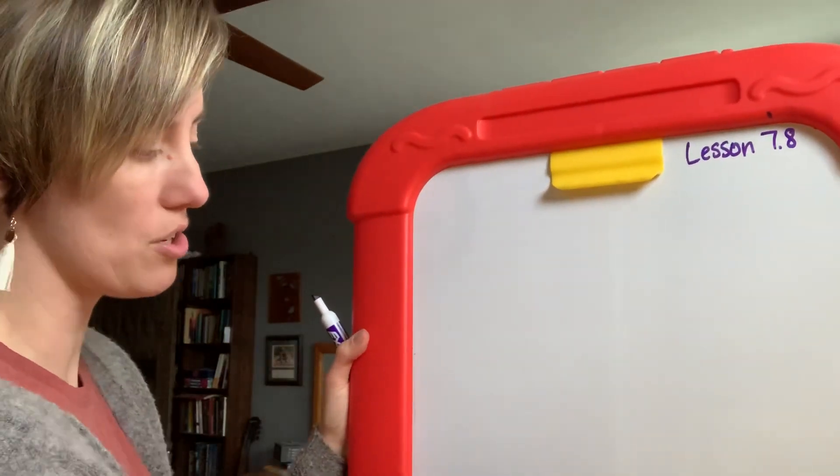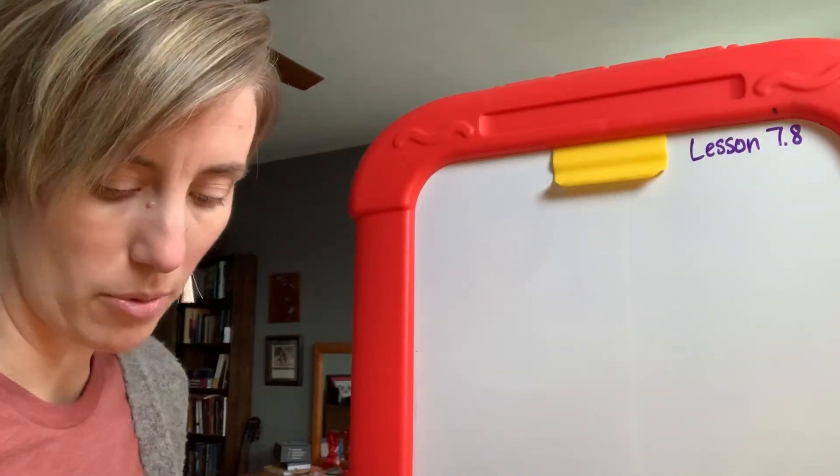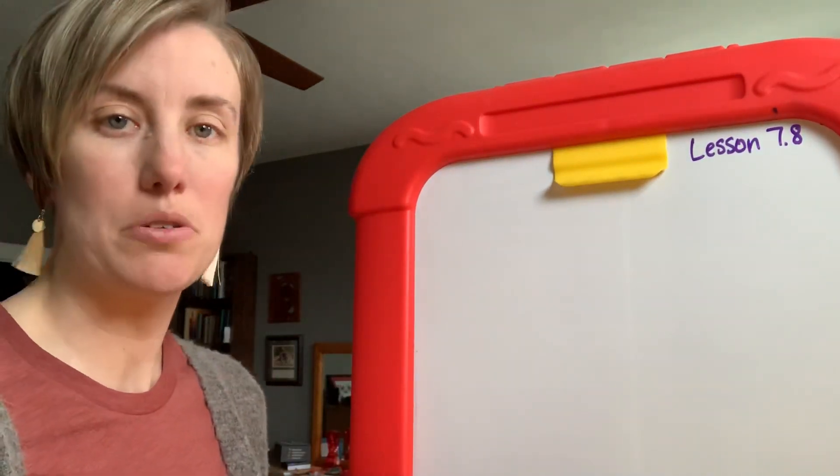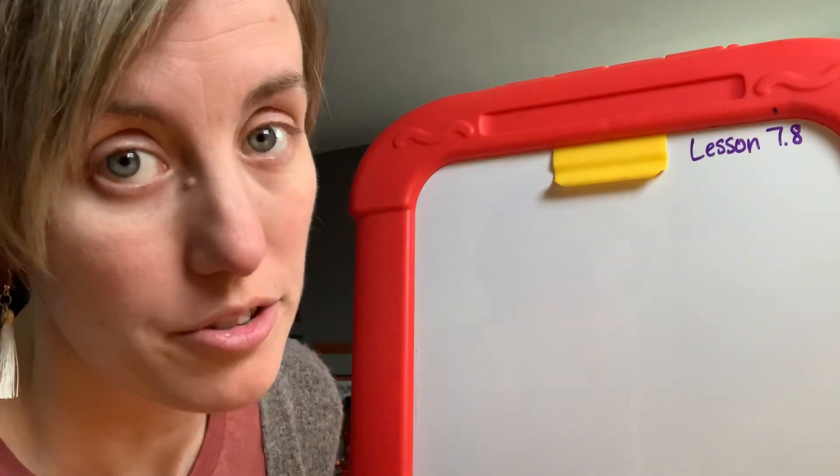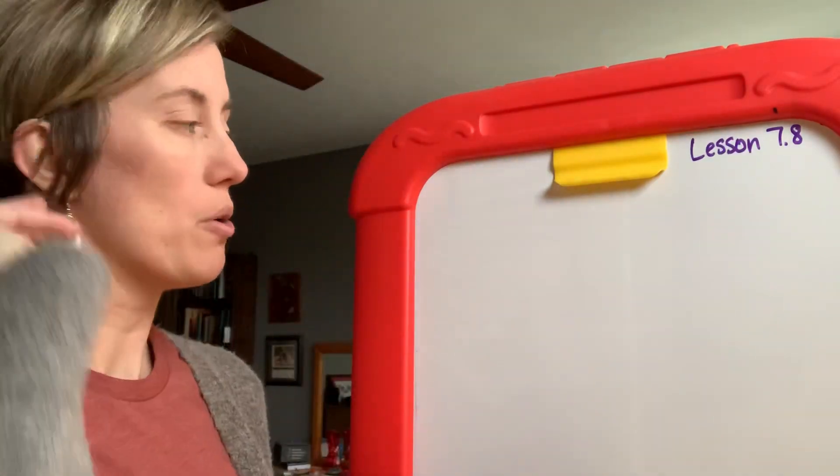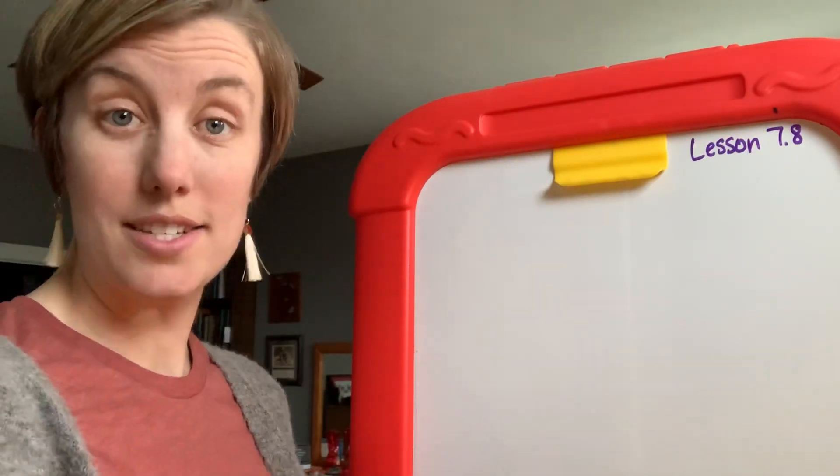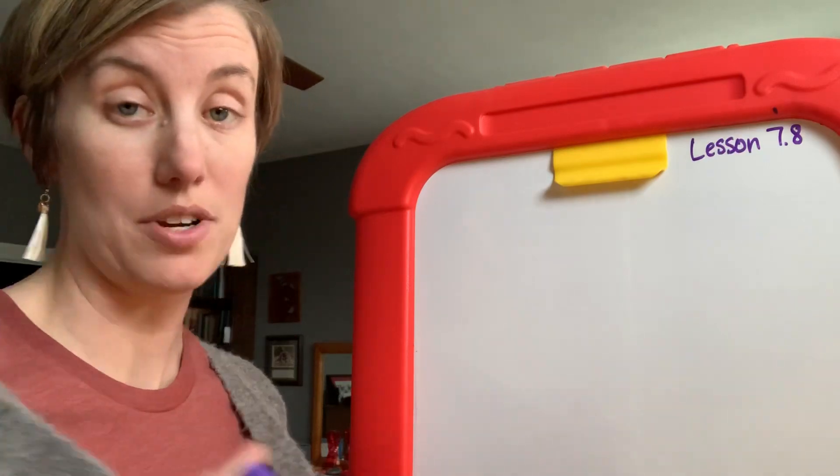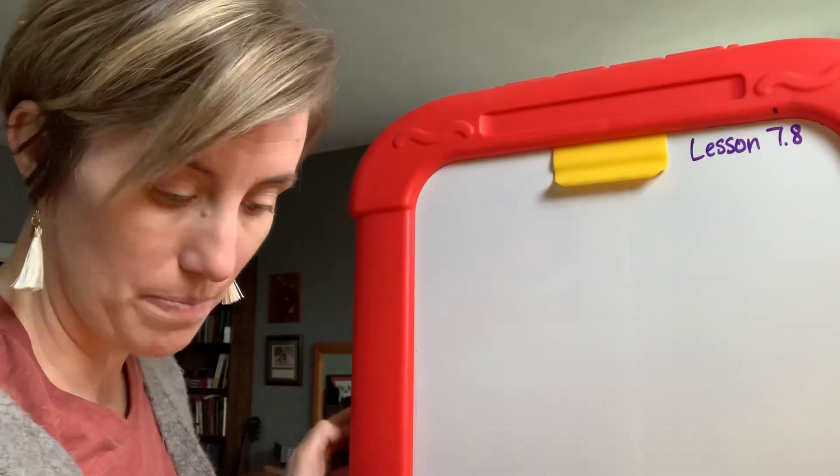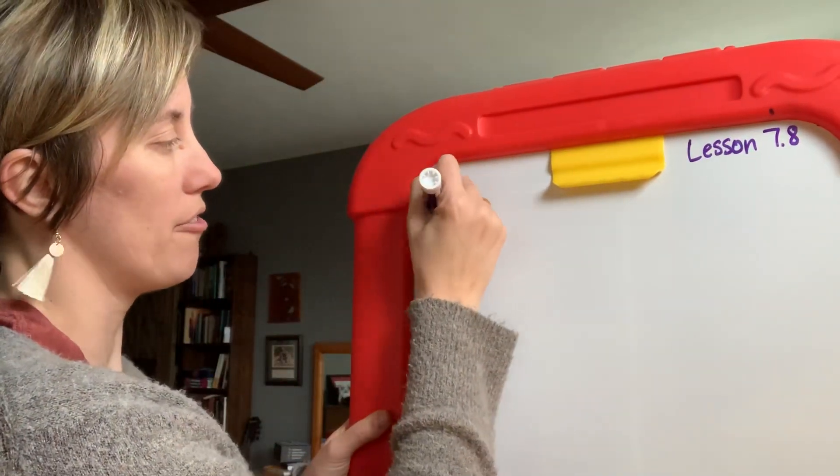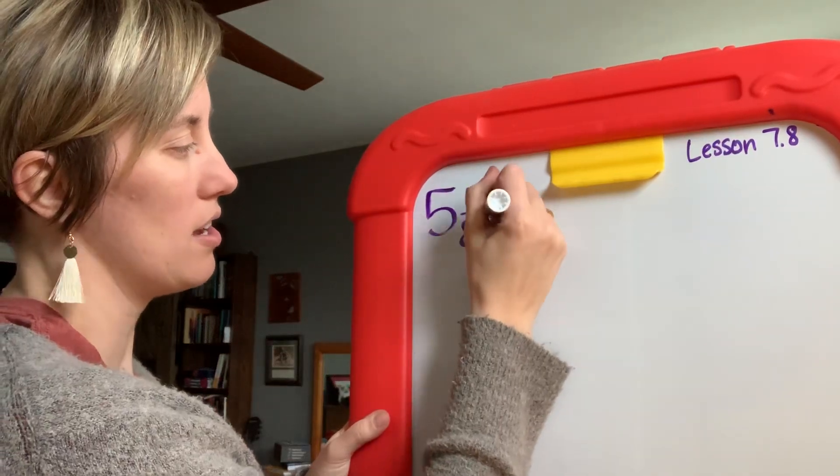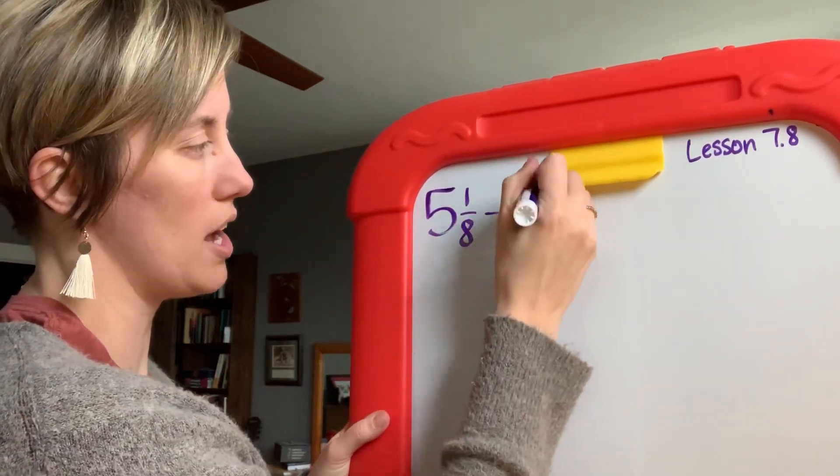Now as lesson 7.8 continues on to page number 430, it gives you another strategy, my personal favorite, but as we always say in my class students get to decide what strategy they use, I do not get to decide. I just show them to you. So we have 5 and 1/8 minus 3 and 3/8.